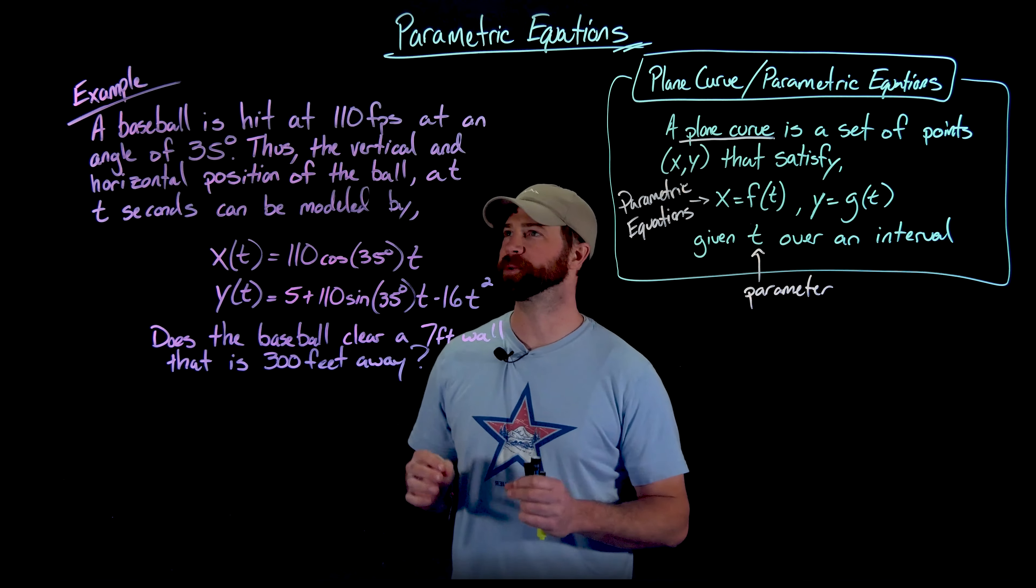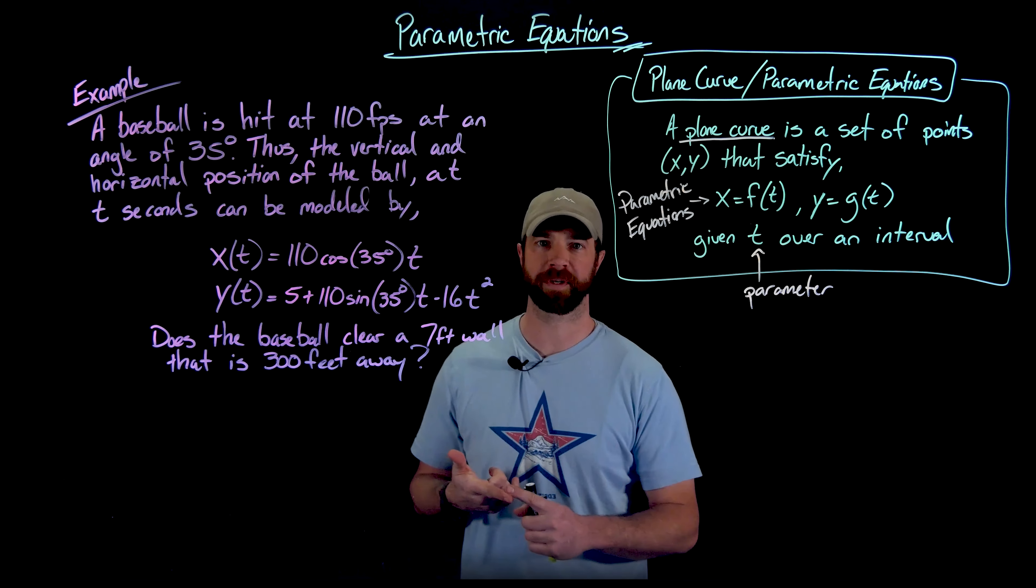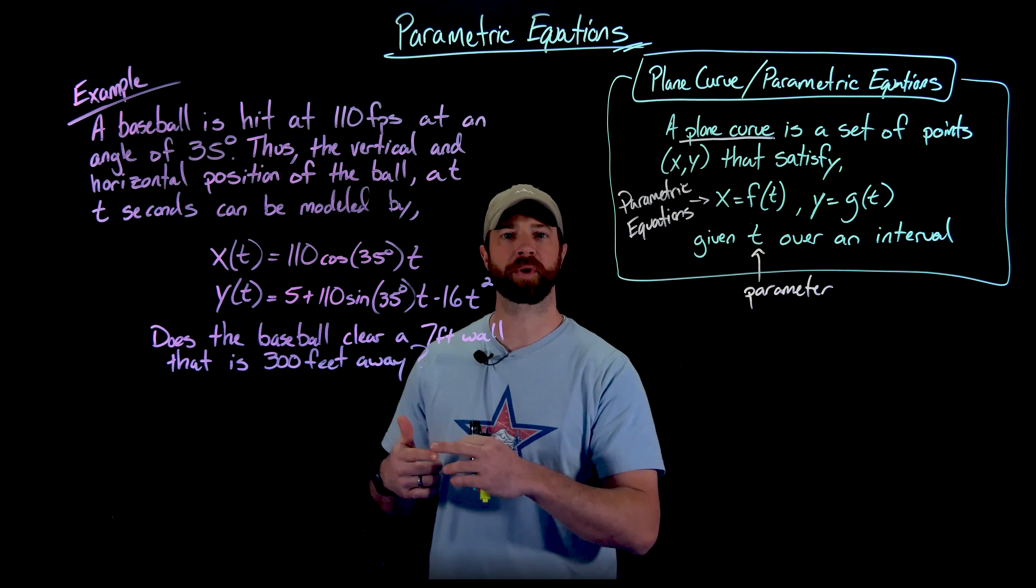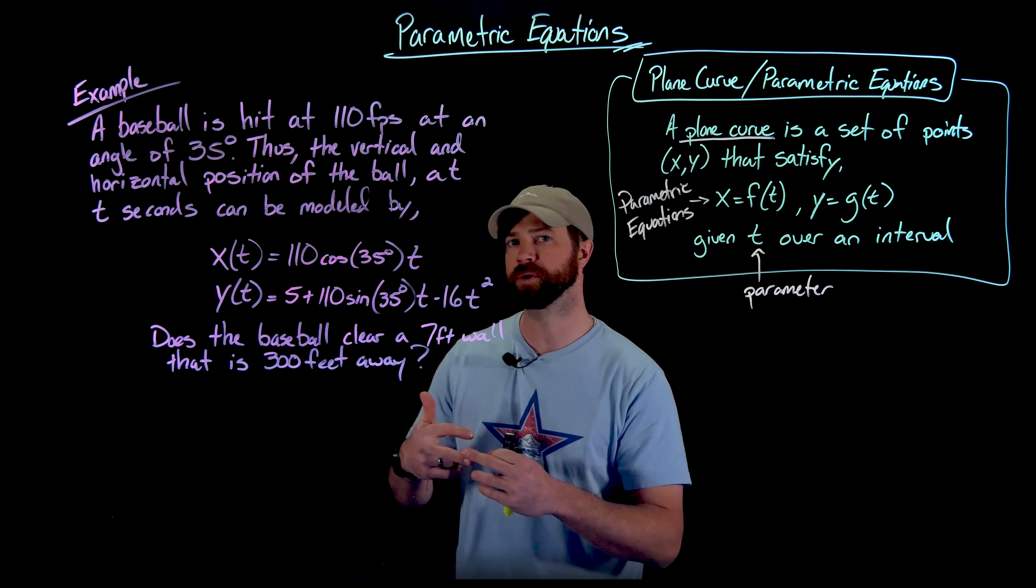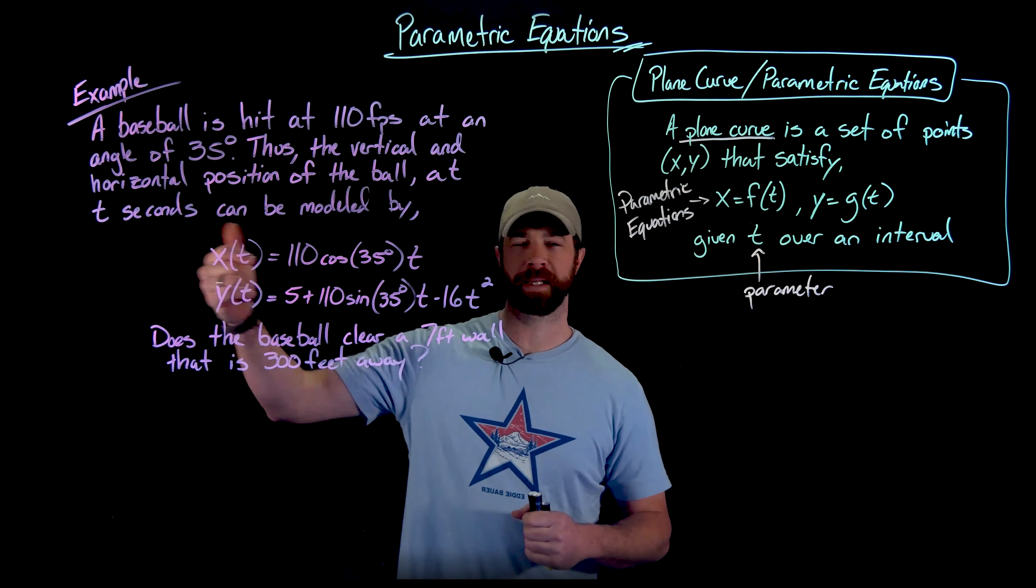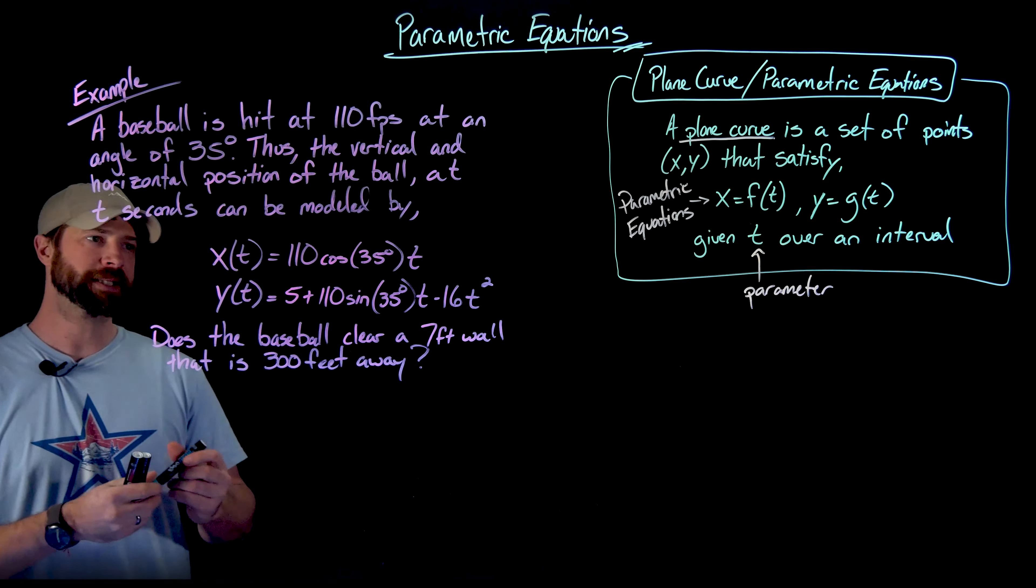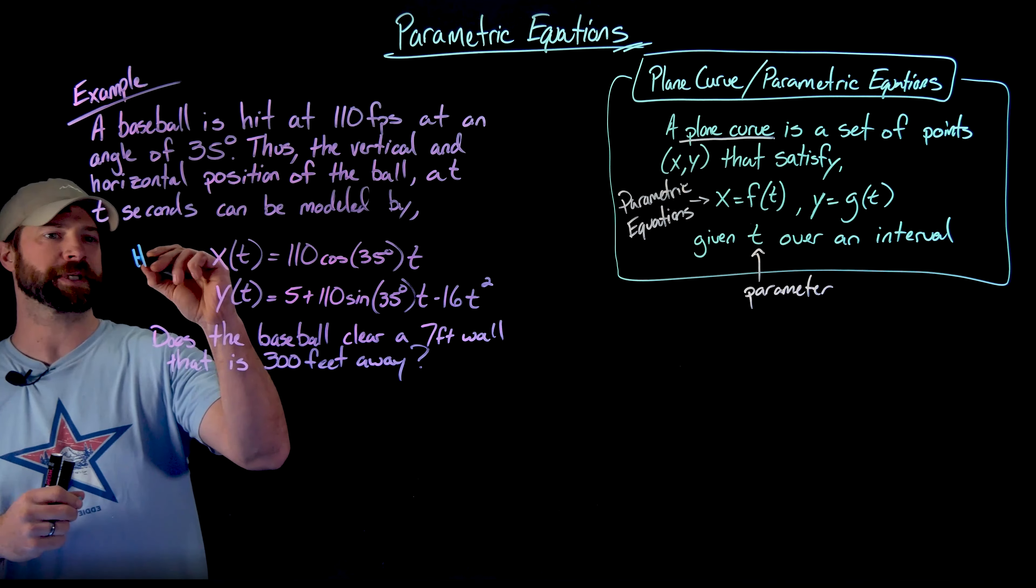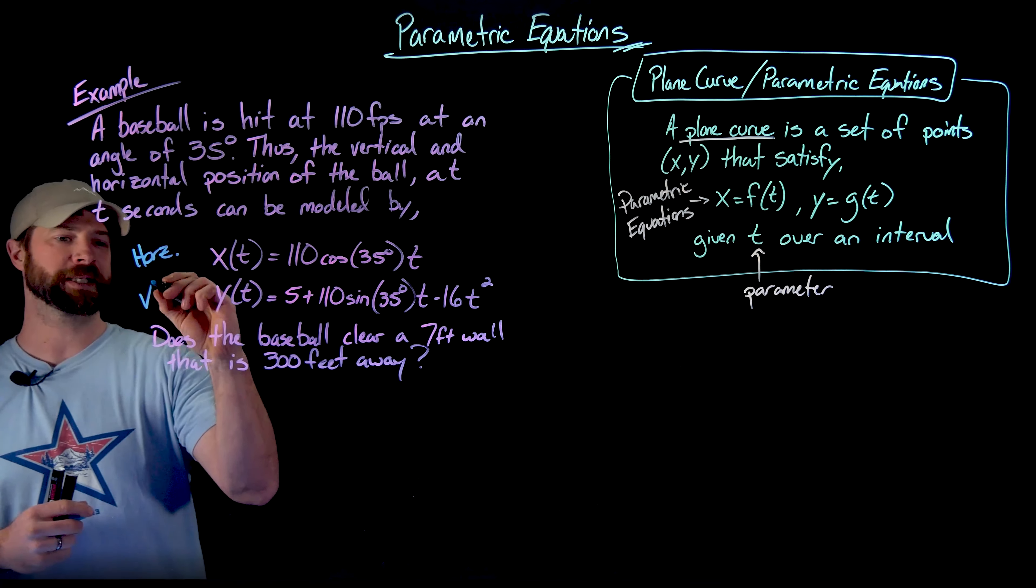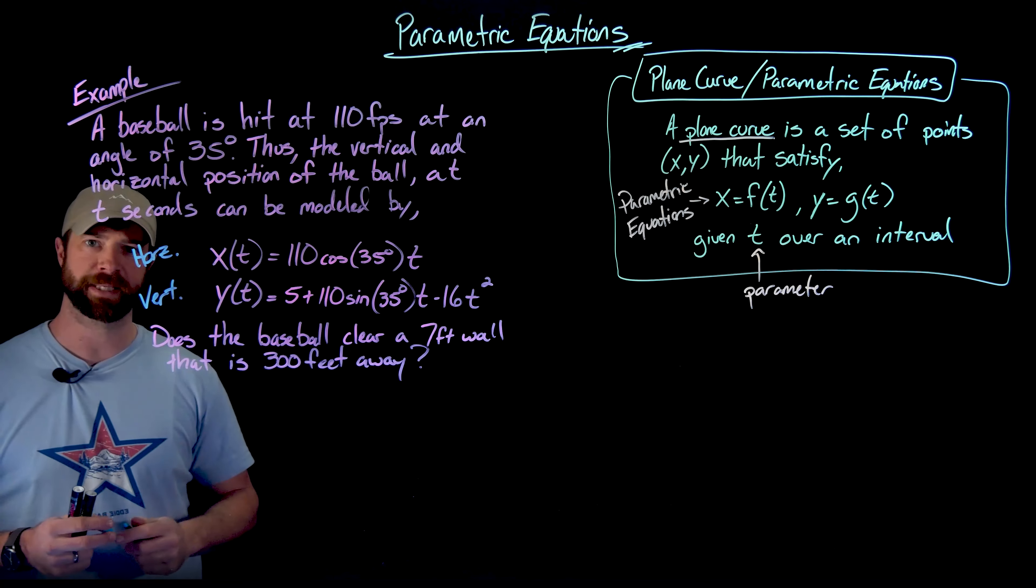All right, in this example, we're being told that a baseball is hit at 110 feet per second at an angle of 35 degrees. Then we're being told these parametric equations that describe the horizontal and the vertical component of the height of the ball separately right here. And this is very important. So this right here, X of T, is describing the horizontal position of the ball and Y of T is describing the vertical position of the ball at time T.